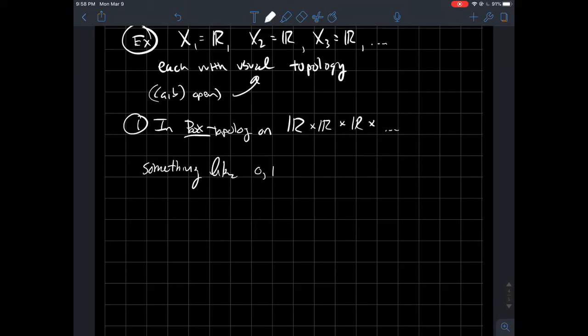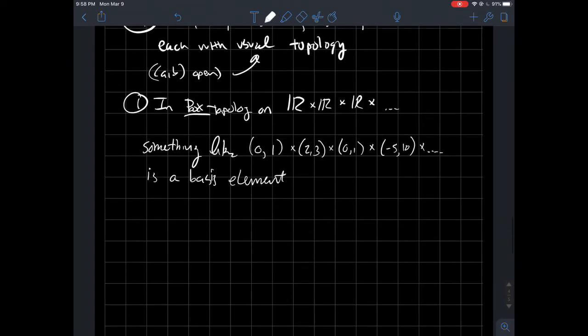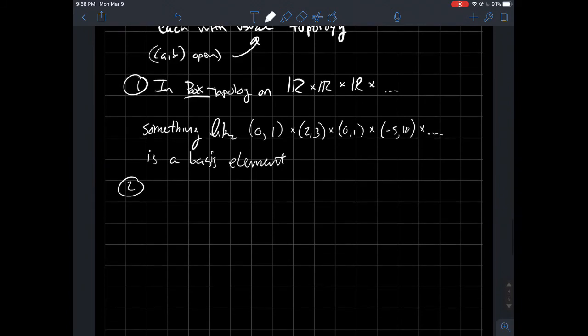Something like the interval (0,1) cross (2,3) cross (0,1) again, I'm just randomly picking stuff. And maybe I'll pick one more, (-5,10) cross et cetera. This is a perfectly good basis element in the box topology. This is not a basis element in the product topology.